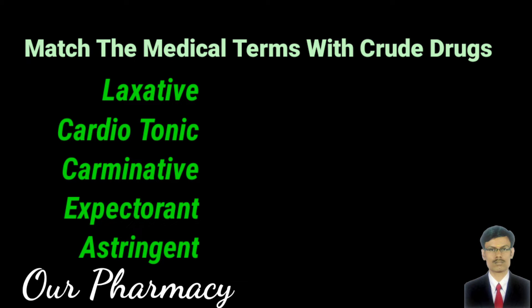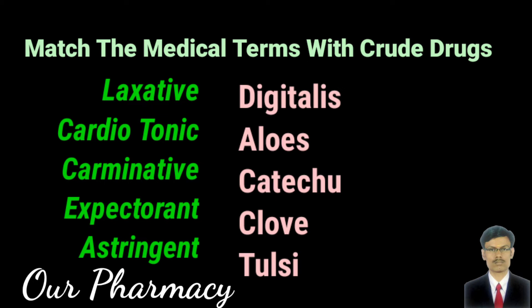On the right-hand side, the drugs listed are digitalis, aloes, kattachoo, clove, and tulsi.